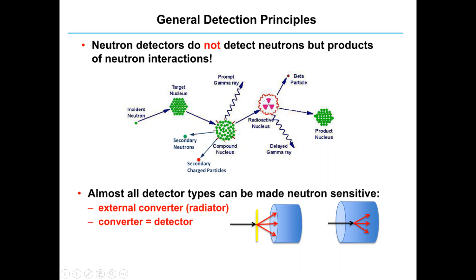First of all, we will talk about the general detection principle of the neutron. As you know, the neutron has a net charge equal to zero. So that's why neutrons cannot be detected directly, just like we detect protons or electrons, because the proton has a positive charge and the electron has a negative charge. But unlike those, neutrons are neutral, so they cannot be detected directly. There are different ways for indirect detection of neutrons.